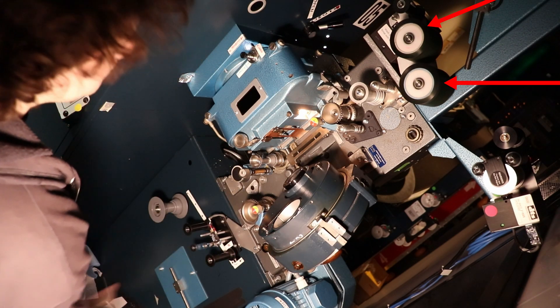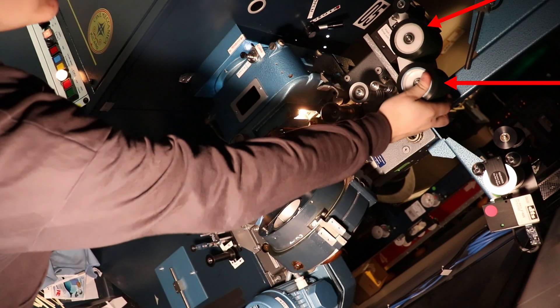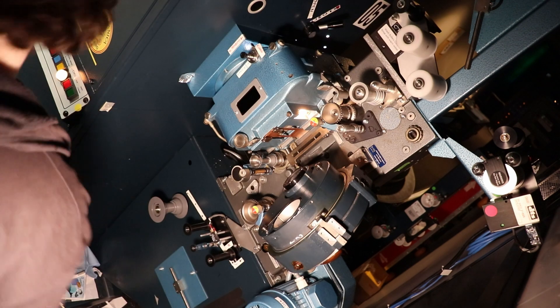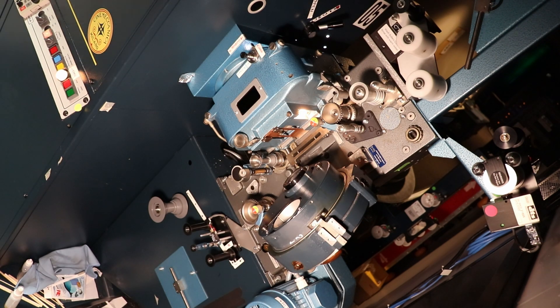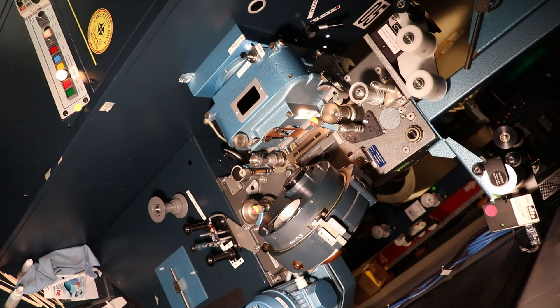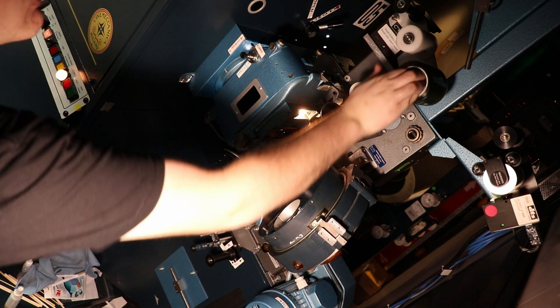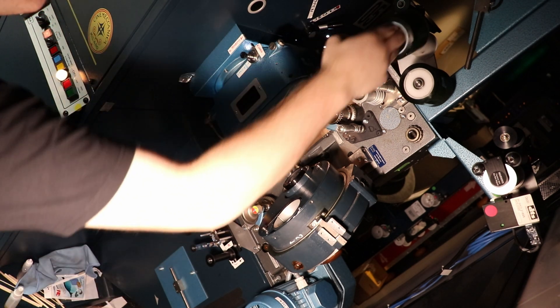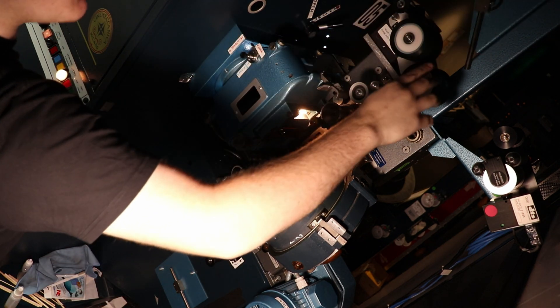At the top of the projector, there's what are called particle transfer rollers, or PTRs for short. They have a tacky surface that will pick particles of dust and dirt off the film as it's running, and we need to clean those so we don't just stick the dirt back onto the print. Because that'd be bad. These need to be rinsed out of running water between every show, so I usually do them first to make sure they have enough time to dry.